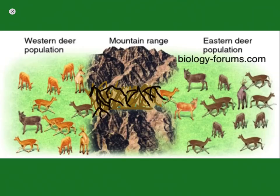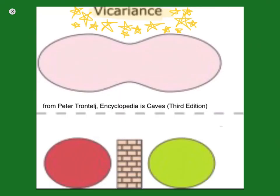It is worth mentioning that single populations can be split up by barriers, but multiple populations that still have gene flow between them can also be separated further by geographical barriers and can also start to speciate because of the lack of gene flow. The process of separation and speciation is called vicariance.